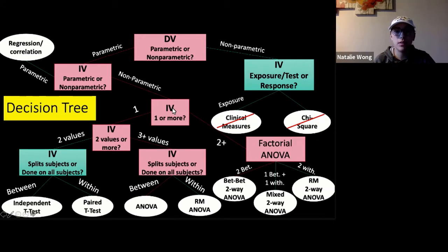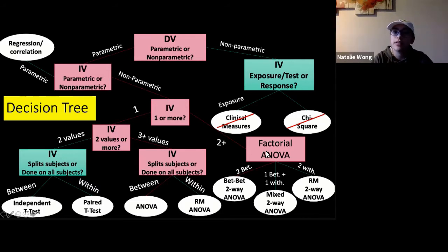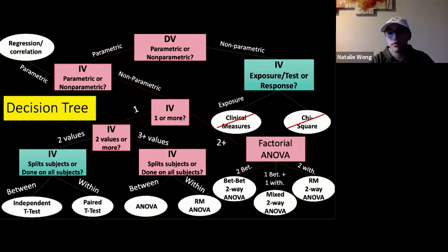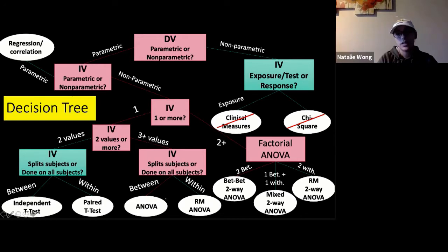The main difference between these two is where they break off at the independent variable box. One-way ANOVAs have one independent variable; two-way ANOVAs have two or more. You could also have three-way or four-way ANOVAs — the most I've seen in a research article is a four-way, which provides a lot of different comparisons. In each case for one-way and two-way, you could have between or within subject independent variables, and that determines the type of ANOVA.